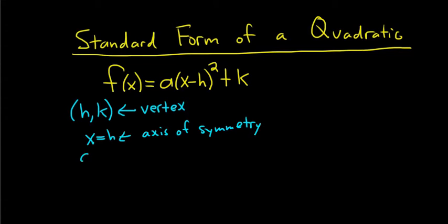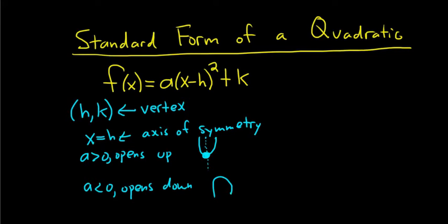If a is positive, it opens up. So it would look something like this, and this dot here is the vertex. And the axis is this invisible dotted line that cuts it in half. And if a is less than zero, it opens down. So it would look like this. There's the vertex, and this invisible dotted line is the axis.